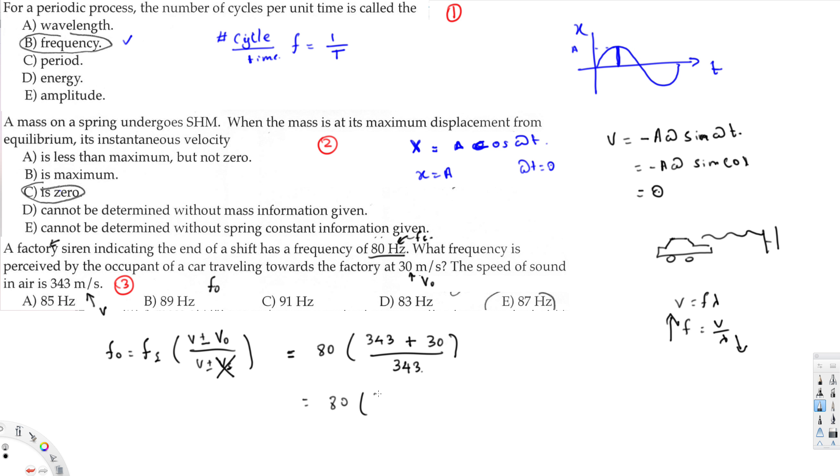This is going to be 80 times 373 divided by 343. If you calculate this value you will get roughly 86.997 Hertz, and that's near to 87 Hertz. So 87 Hertz is the answer for this question. I hope you guys like this video, see you next time.